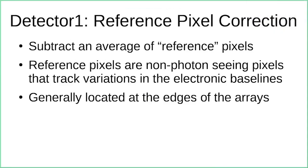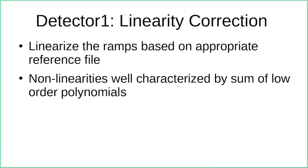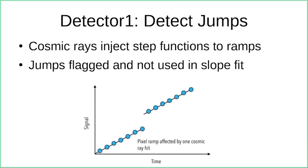All these detectors have reference pixels around the periphery — pixels that don't see light — which track variations in the electronic baselines. These are averaged and subtracted on a group-by-group basis to remove electronic drifts. We also apply a linearity correction at this stage based on a reference file; all the detectors are well characterized by a low-order polynomial. Another advantage of having the ramps is that if a cosmic ray hits a pixel, it injects a step function in the ramp.